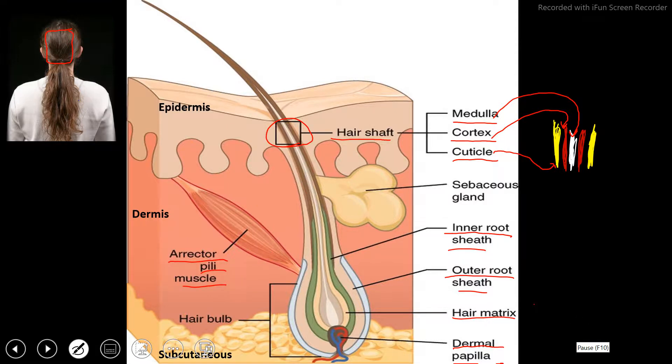Last but not least, we have the sebaceous gland here. The sebaceous gland secretes sebum to lubricate the hair here. This gland is an exocrine gland, meaning it secretes its product through a duct out onto the skin.